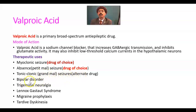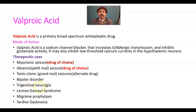Bipolar disorder — valproic acid is useful in bipolar disorder, especially in the manic phase. It may be used along with lithium, which is the drug of choice for bipolar disorder. It is also used for trigeminal neuralgia or other pain syndromes like glossopharyngeal neuralgia.